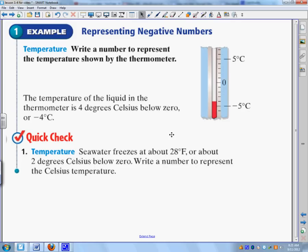So what it says is write a number to represent the temperature shown by the thermometer. So you look over here at the thermometer, and you see, okay, here's zero. So it's negative 1, negative 2, negative 3, negative 4 degrees outside, negative 4 degrees Celsius outside. Pretty simple, okay?